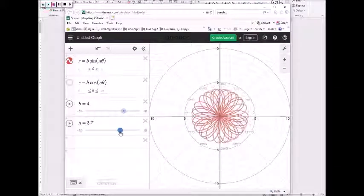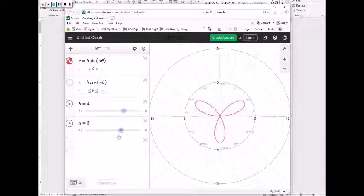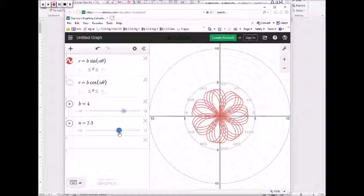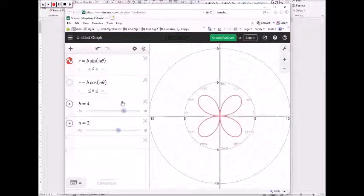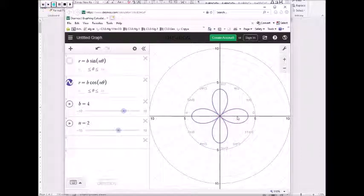If it's odd, it just becomes three. What if it's two? It's four, same length. Cosine, as you can see, you start your first petal on the x-axis. So you can play with this.